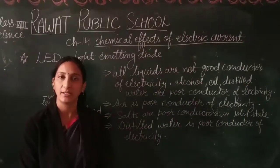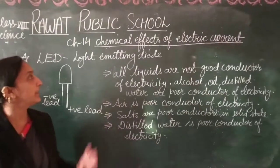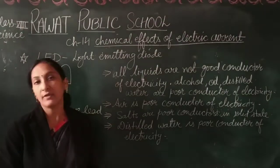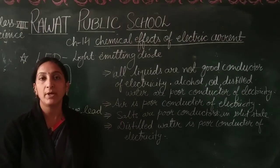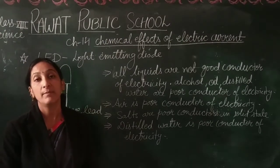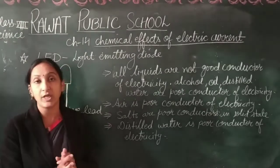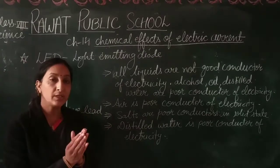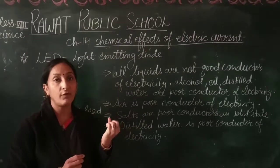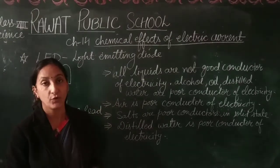Good morning, students. Let's start today's lesson with the same chapter, chapter number 14, Chemical Effects of Electric Current. In our previous lesson, we studied about conductors and good conductors, and we did some activities to find out about the characteristics of liquids — whether a liquid is a good conductor or a poor conductor.